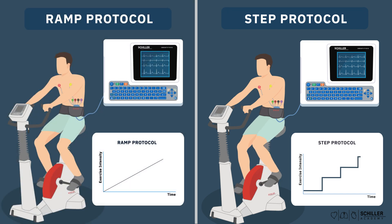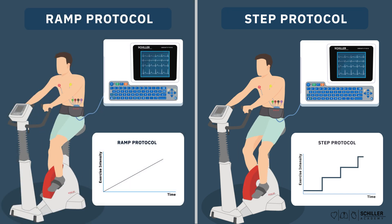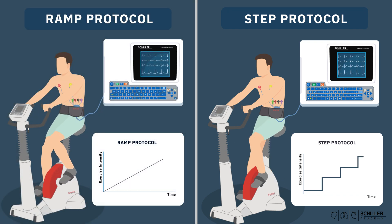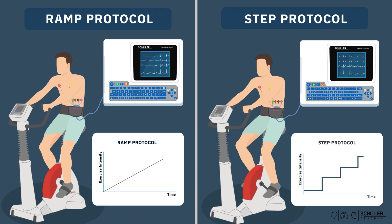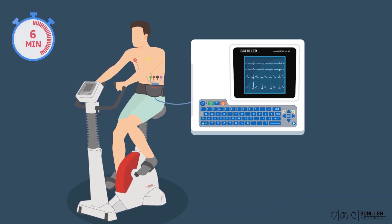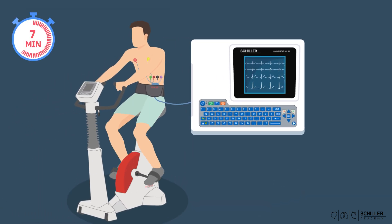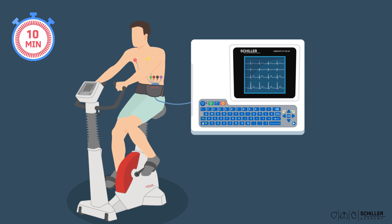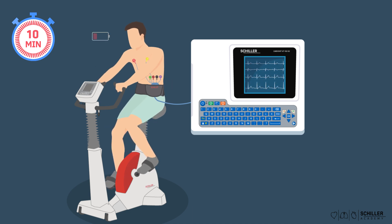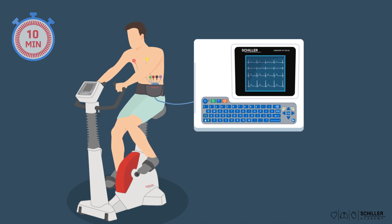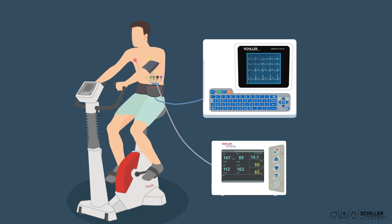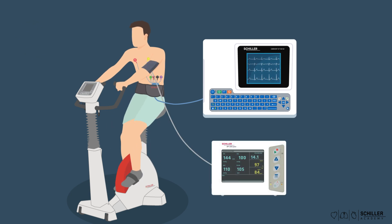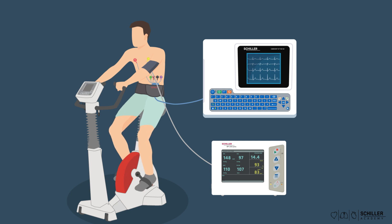What kind of protocol to choose and how the intensity will increase during the test depends on the fitness level of the patient. These parameters should be chosen so that the test duration reaches approximately 10 minutes before the patient is not able to keep up the intensity anymore. During the exercise ECG, it is important to also monitor additional vital signs of the patient, such as the blood pressure.